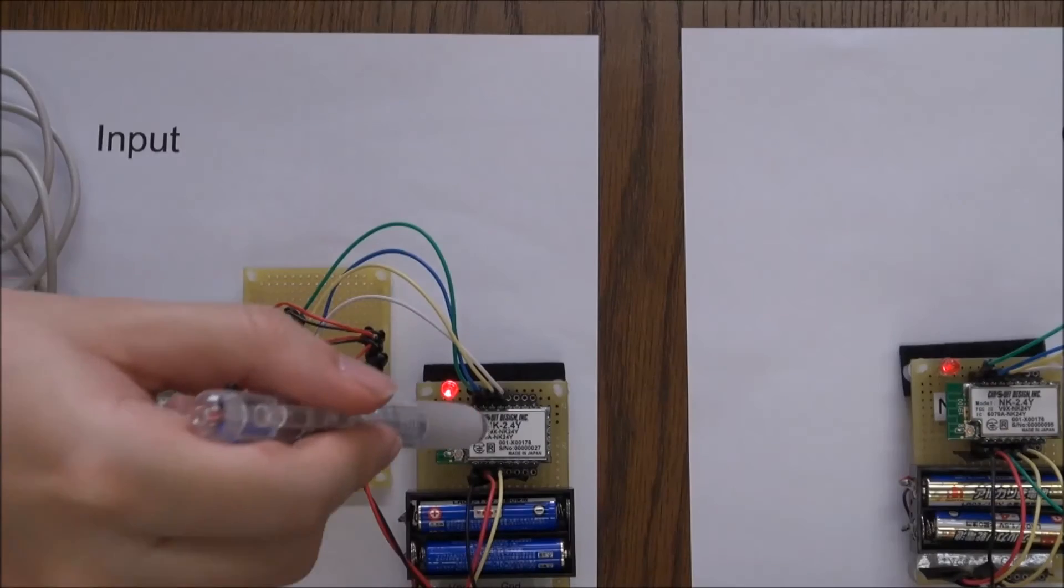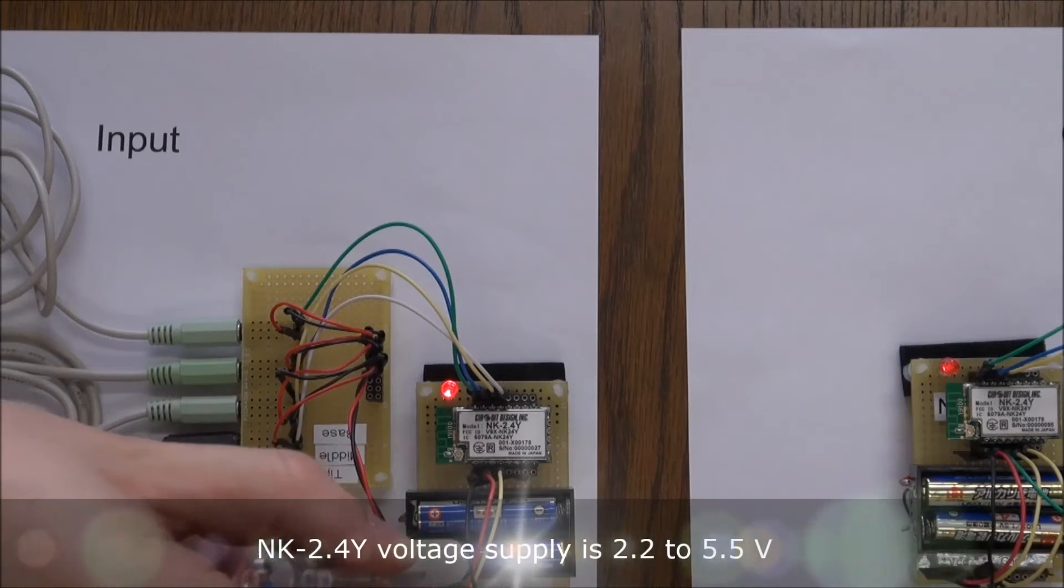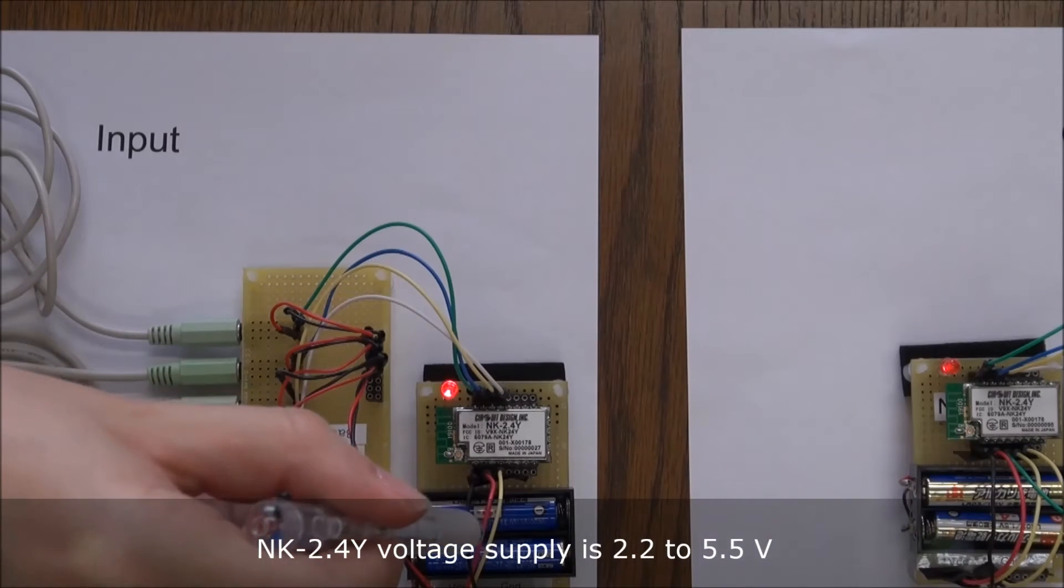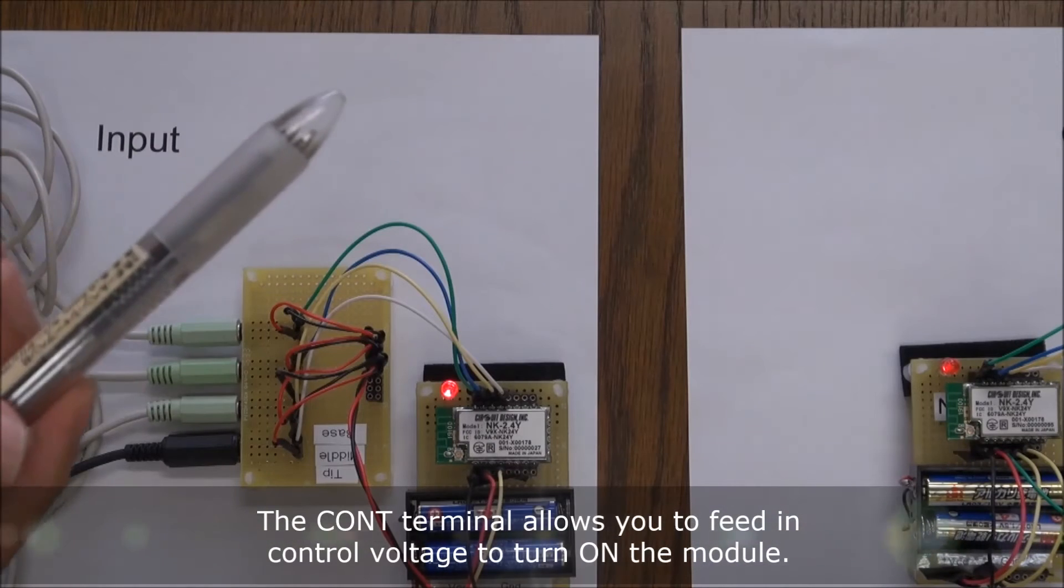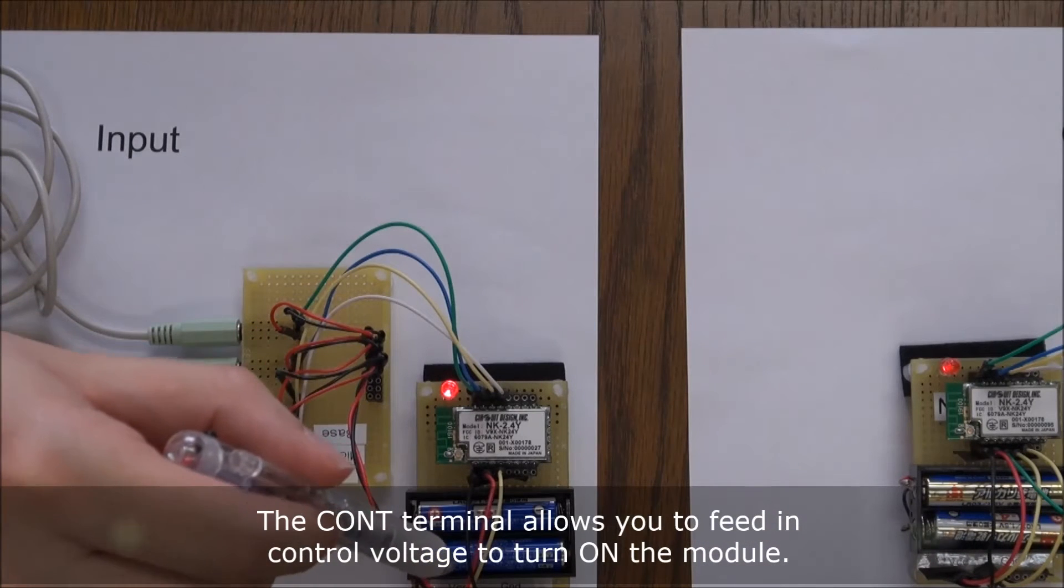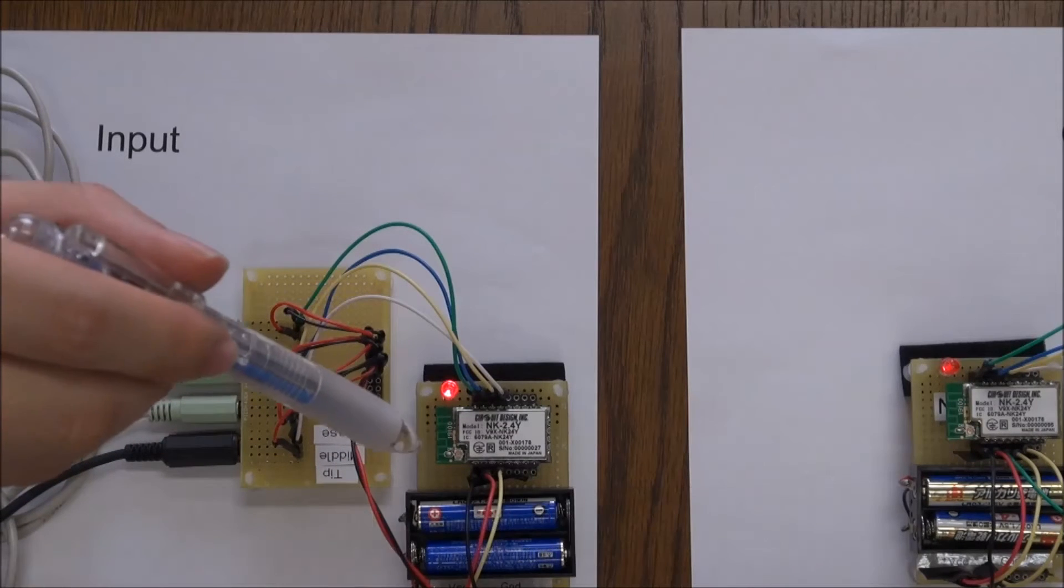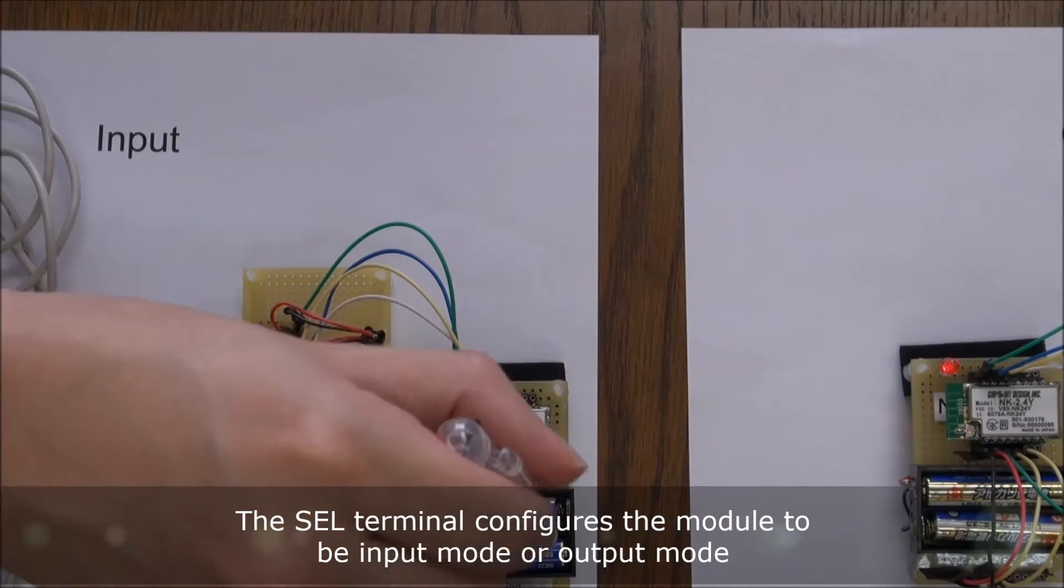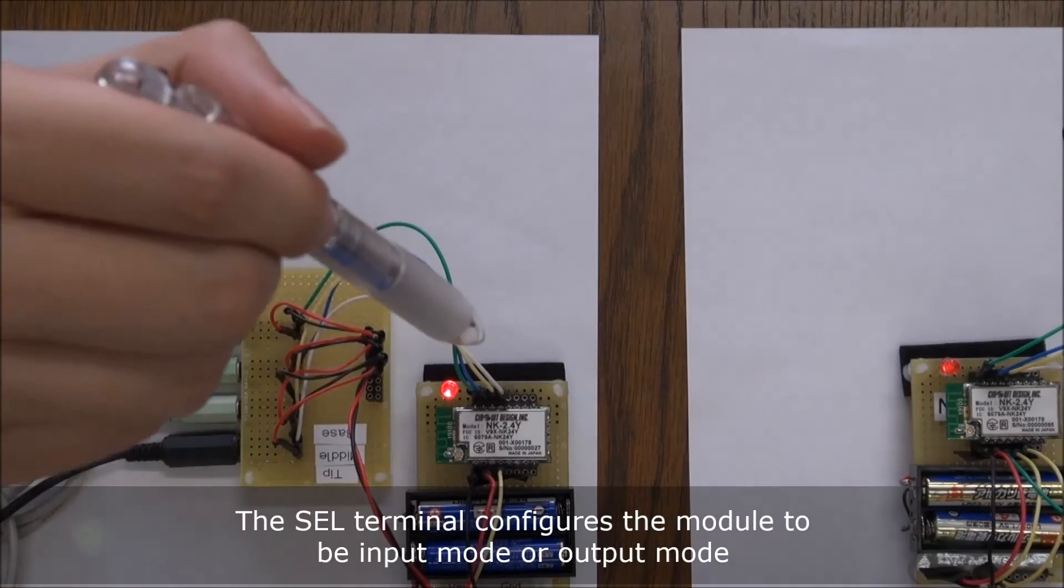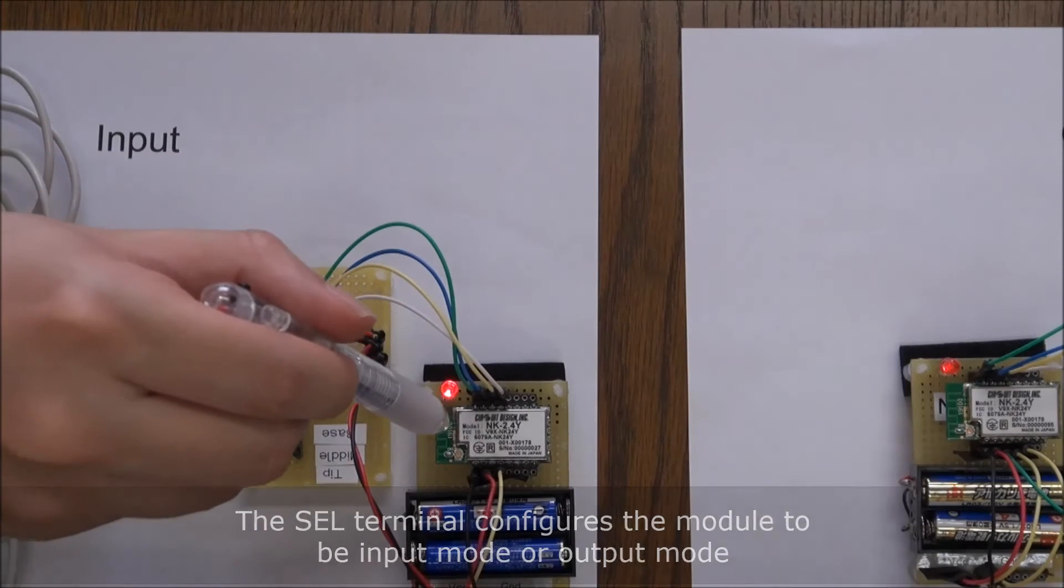The NK is connected to VCC and ground here, and we have a third wire, which is the control wire, which is basically a control VCC, which we've just tied up with the normal VCC. And also on here is a selection terminal to configure the module as input or output.